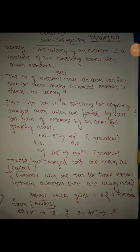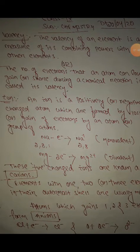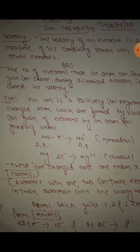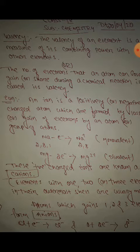Here is the definition of valency. Valency of an element is a measure of its combining power followed by ions. An ion is a positively or negatively charged atom formed by losing or gaining electrons. When a sodium atom loses one electron, it becomes sodium plus, which is monovalent.